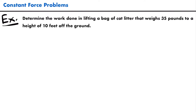Our first example: determine the work done in lifting a bag of cat litter that weighs 35 pounds to a height of 10 feet off the ground. The basic formula you need to know is that work is equal to force times displacement. Work is the energy transferred to or from an object by a force along a displacement.